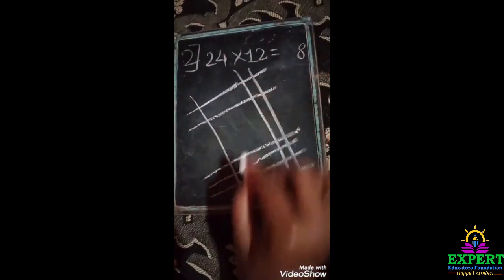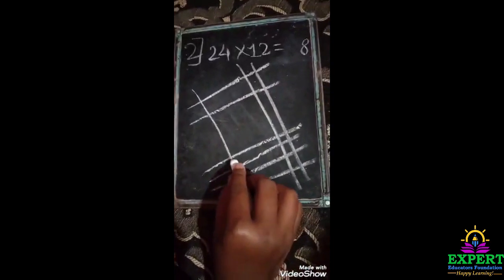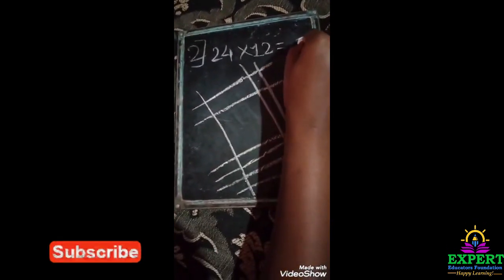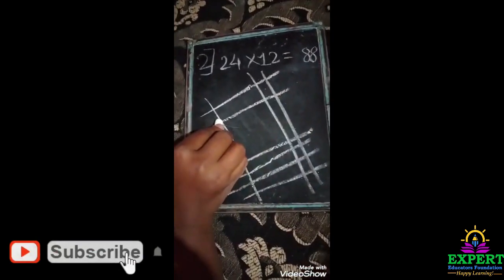And these both, one two three four five six seven eight, so here we will write eight. And here one two.